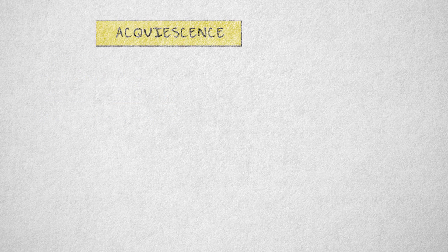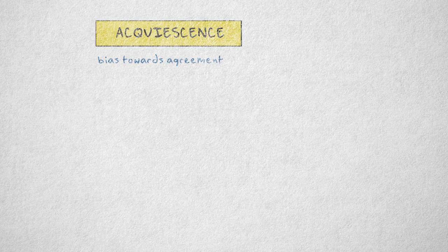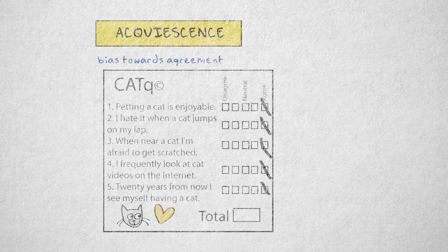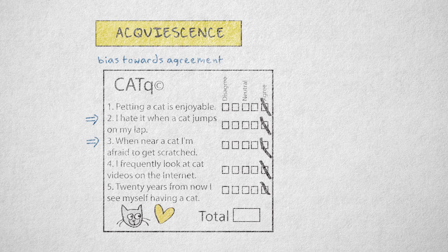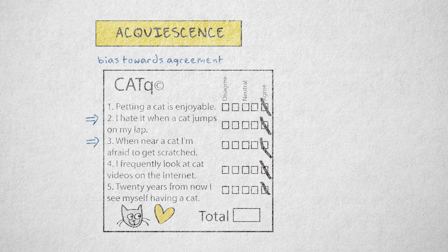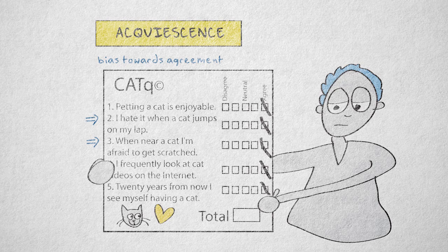Acquiescence refers to the tendency to agree with all statements, regardless of their content. An easy way to spot this bias is to include some negatively phrased items. Consider my cat fondness questionnaire. Items 2 and 3 are negatively worded. Someone who agrees with statements 1, 4, and 5, but also with statements 2 and 3, isn't answering consistently.